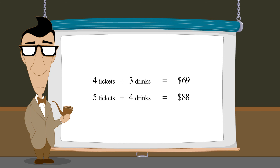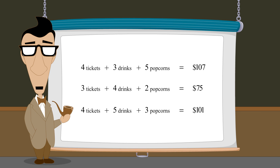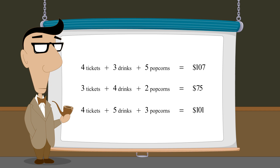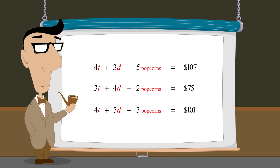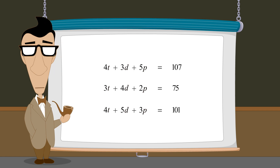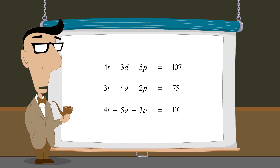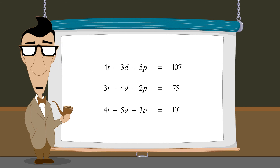But what if instead of two groups of people who buy tickets and drinks, there are three groups of people who buy tickets, drinks, and popcorn? This problem now has three unknowns — the price of a ticket, the price of a drink, and the price of popcorn — which we could represent by three variables t, d, and p. This problem would be very difficult to set up using a single equation with one variable. However, the solution can be calculated in a straightforward manner by using a system of three equations in three variables. In the next several lectures, we will introduce methods of solving such systems and see how systems of linear equations in three variables can be visualized in three-dimensional space.